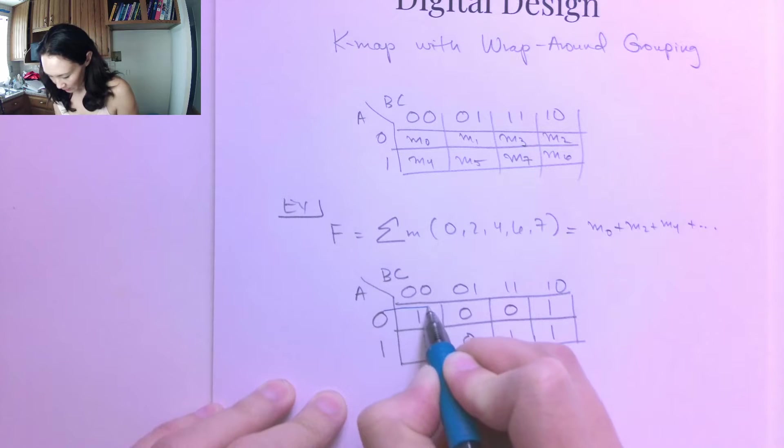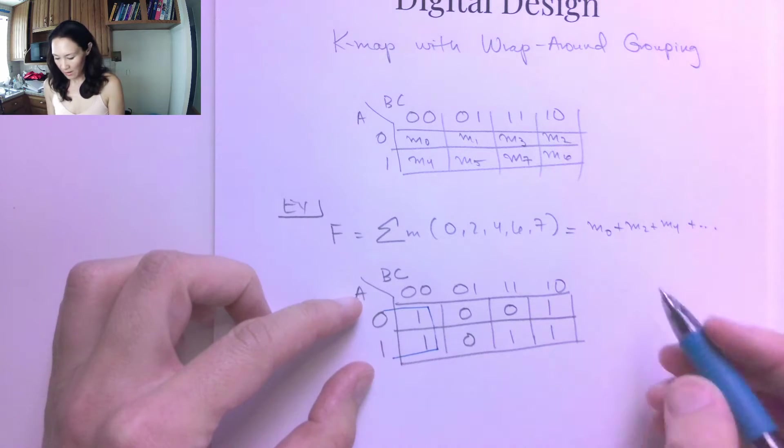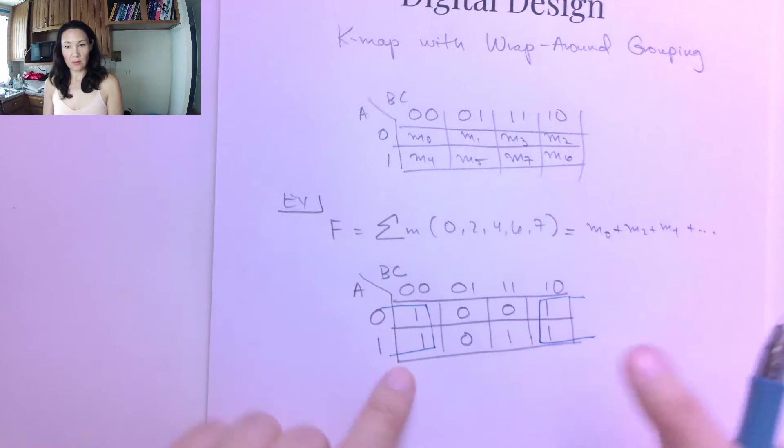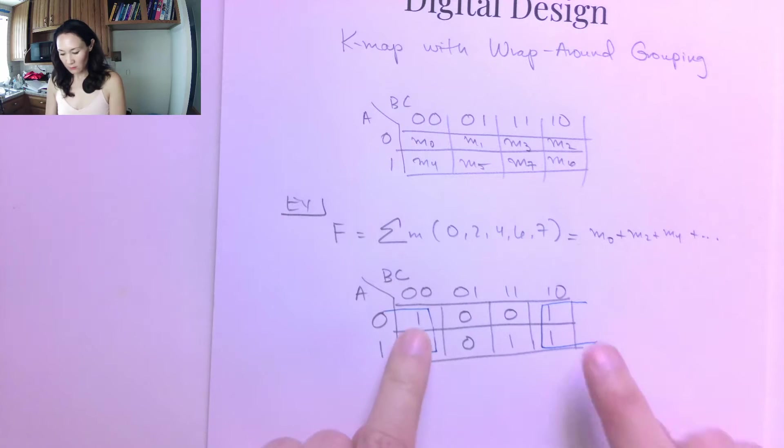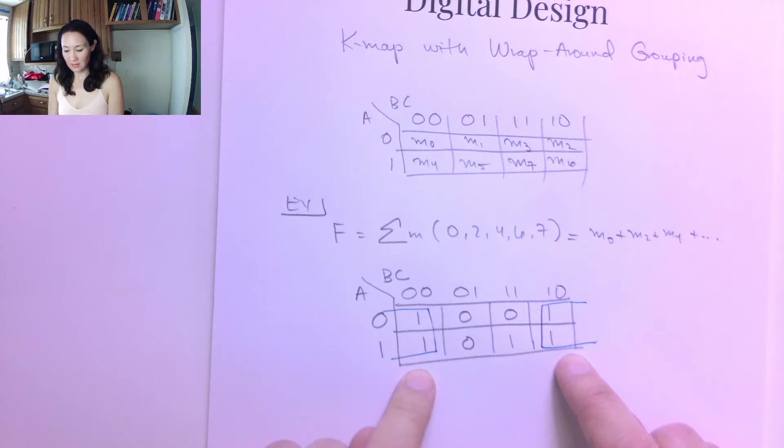And so we're going to do this wraparound grouping. So this is going to group here wrapped around with what's on the right side. So this is actually going to be one group, and the reason why we can do that is because of the gray code. So if you look at these two columns, what is similar about B and C in these two columns? Well, we have B is 0 and B is 1, so that's different, but we have C is 0 and C is 0. So that means the similarities between these two columns is that C is 0 in both of these cases.